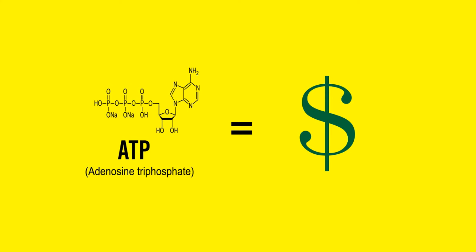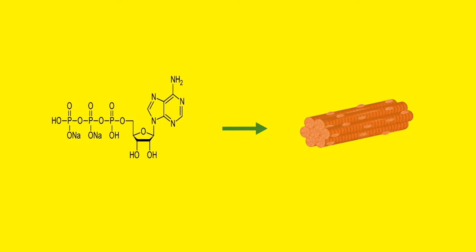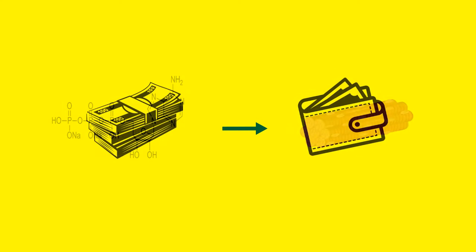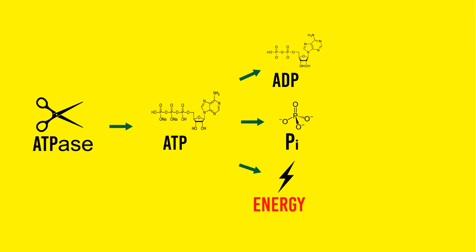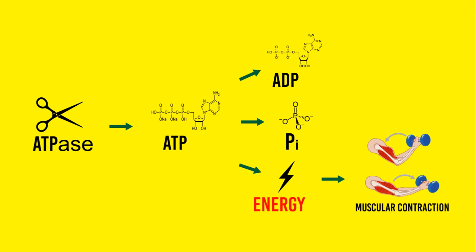ATP is often referred to as a kind of currency in your body. When ATP is produced, it's stored in the muscle cell until it's needed for a future muscular contraction. It's almost like getting paid and storing your money in your wallet for future use. To perform any muscular action, ATP has to be broken down into its original components with an enzyme called ATPase. It's broken down into ADP and a phosphate, and energy is released for muscular contraction to happen — basically like paying for a service with your money.